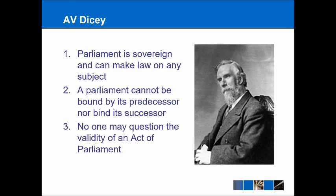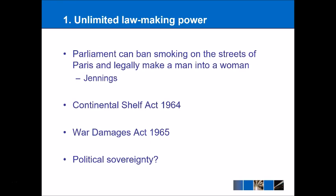Thinking about this unlimited lawmaking power: Sir Ivor Jennings famously said that Parliament could ban smoking on the streets of Paris and legally make a man into a woman. Obviously this would be completely unenforceable, but the idea is that Parliament can legislate on literally anything it decides to. So in the Continental Shelf Act 1964 the UK defined its own borders, and in the War Damages Act 1965 Parliament made an Act that effectively worked retrospectively — applied to something that happened in the past. Normally in terms of the rule of law this wouldn't be allowed, but it just goes to show the sovereignty of Parliament.